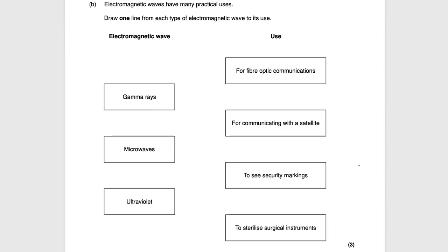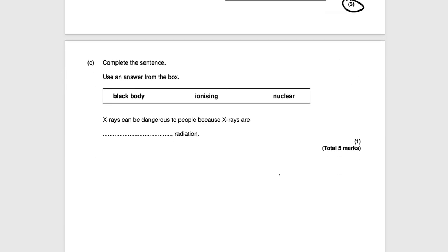Next question. Electromagnetic waves have many practical uses. Draw one line from each type of electromagnetic wave to its use. Gamma rays: a use of it is to sterilize surgical instruments. So you can just match that up there. Microwaves is for communicating with a satellite. And then ultraviolet is to see security markings. That would get you three marks.